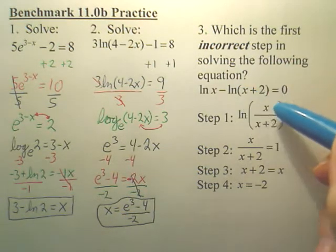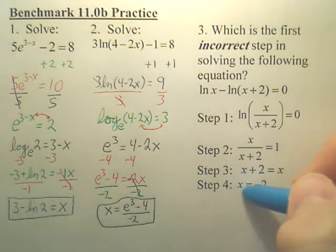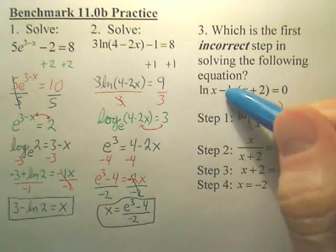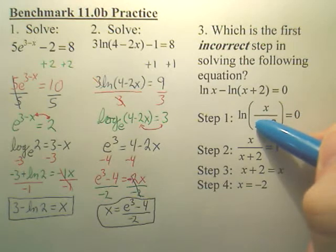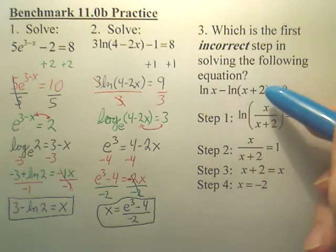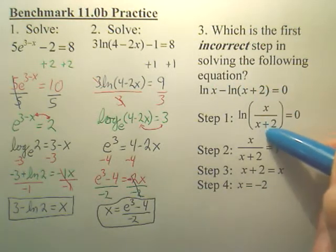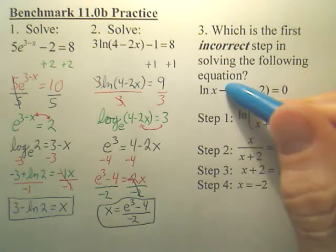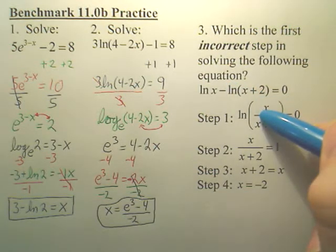For number 3 here, where is the first mistake, or is there one? Well, from here to here, that is an okay operation, because minus means divide. So that simply would be x over x plus 2. That is a fine and dandy logarithmic property.